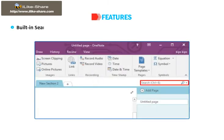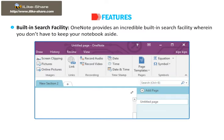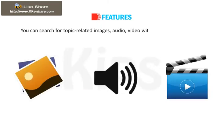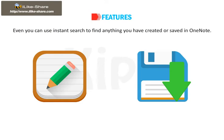Built-in search facility. OneNote provides an incredible built-in search facility wherein you don't have to keep your notebook aside. You can search for topic-related images, audio, and video without opening a browser. You can even use Instant Search to find anything you have created or saved in OneNote.